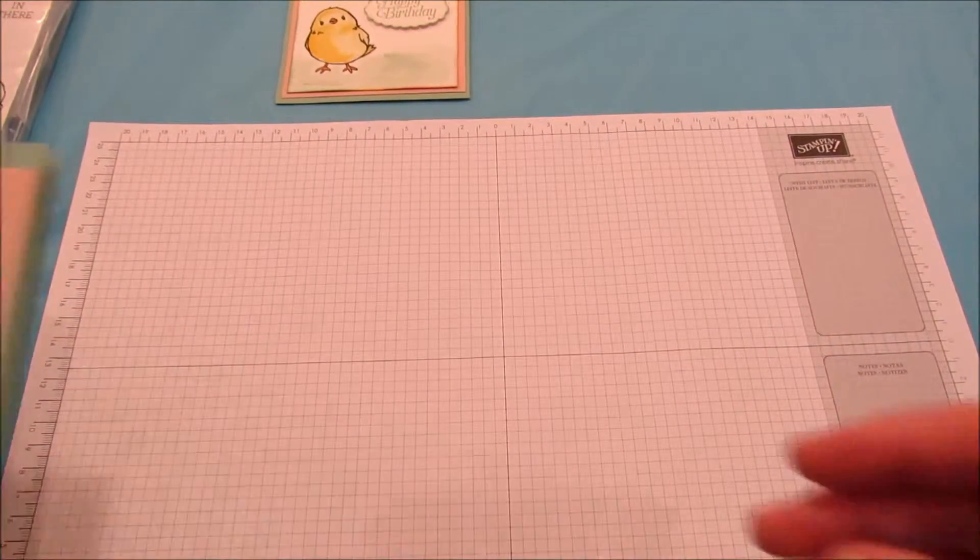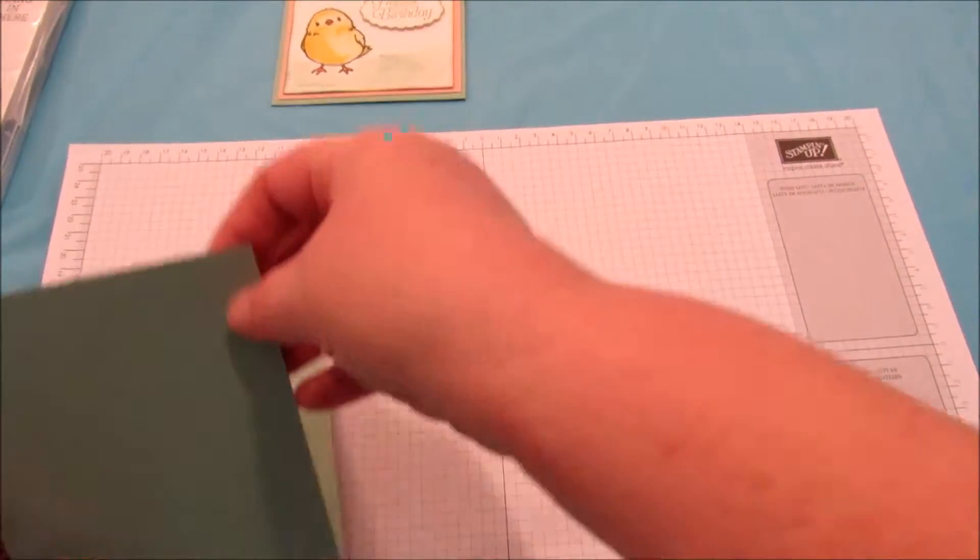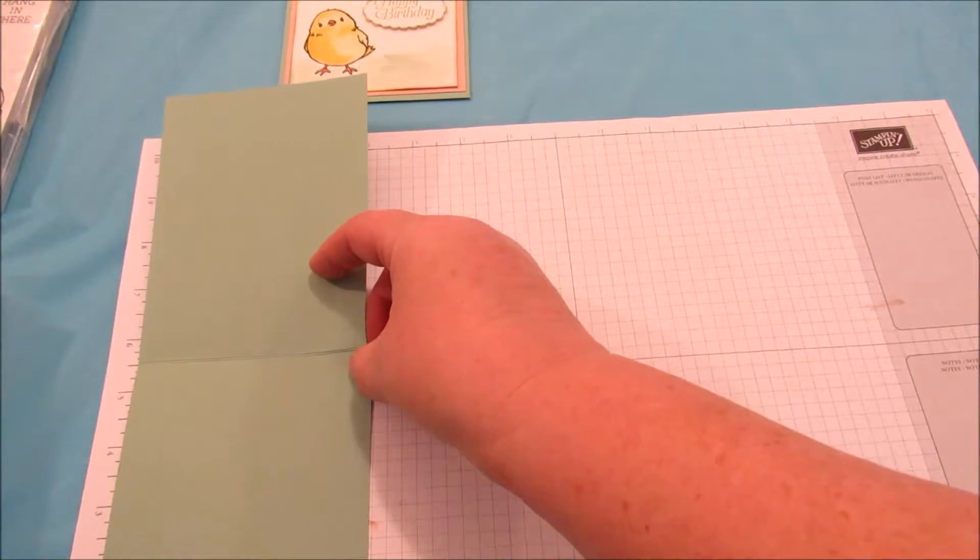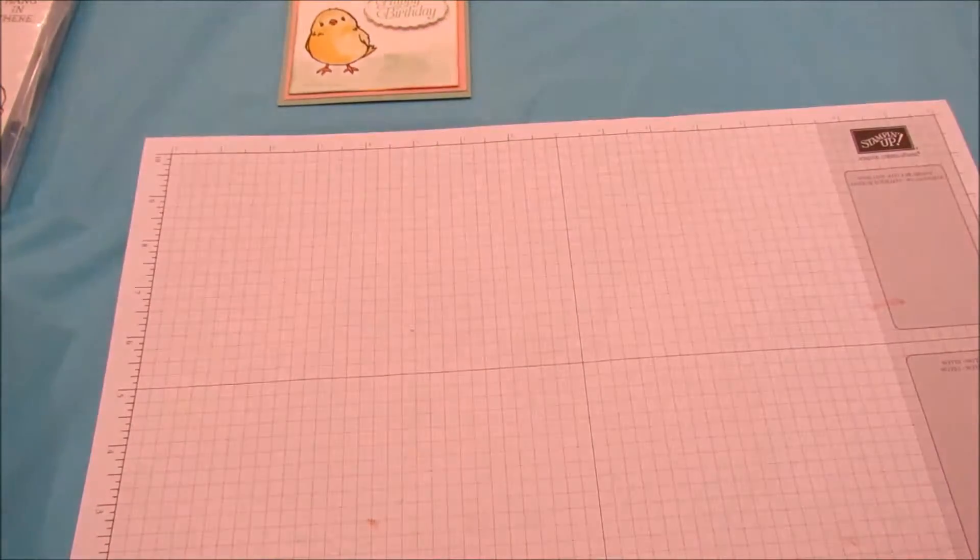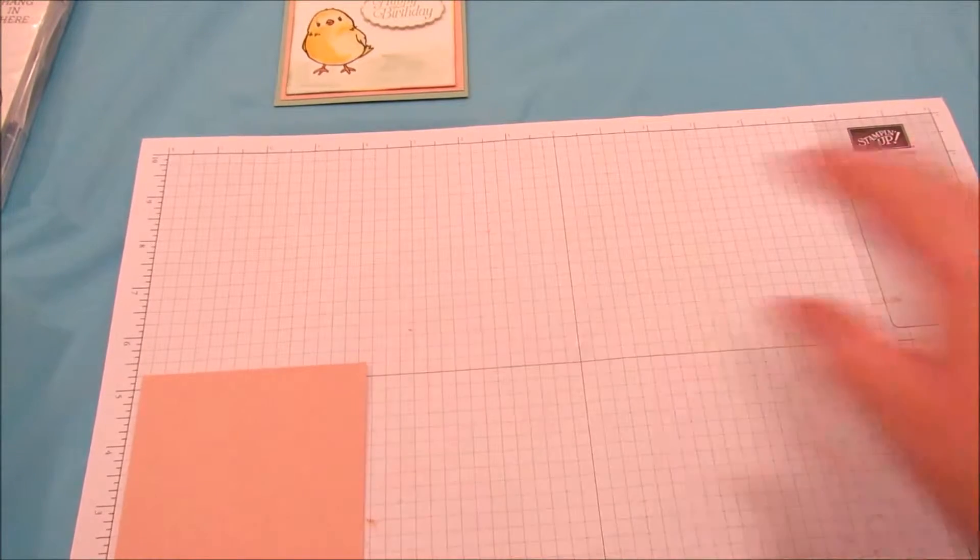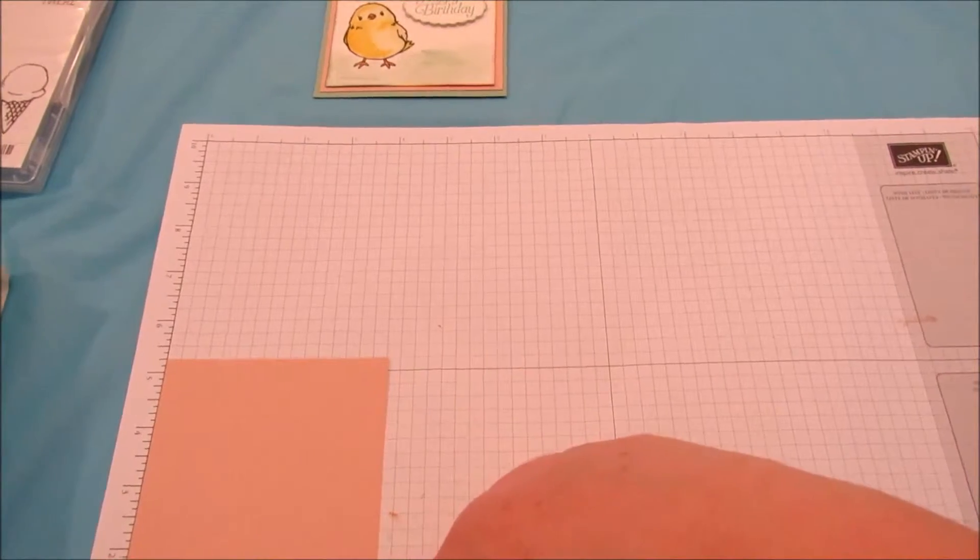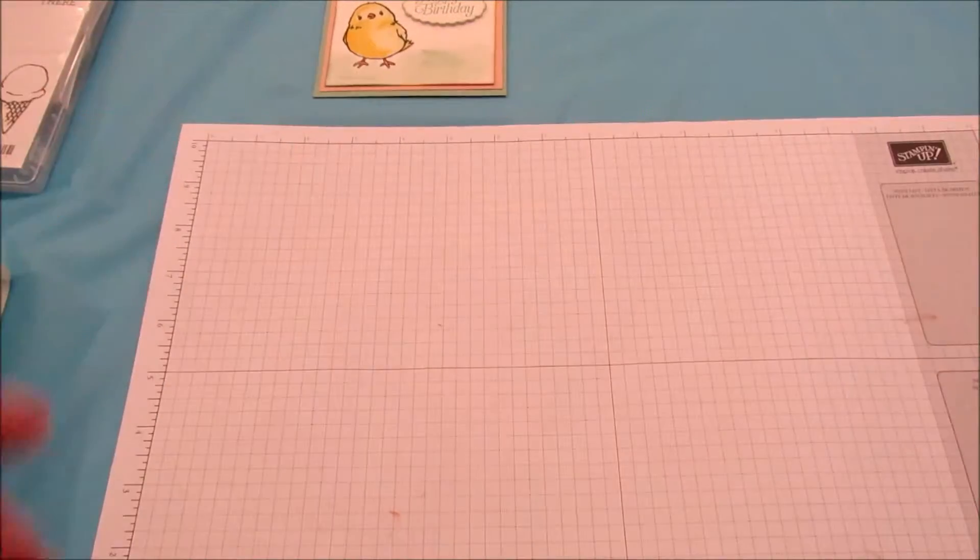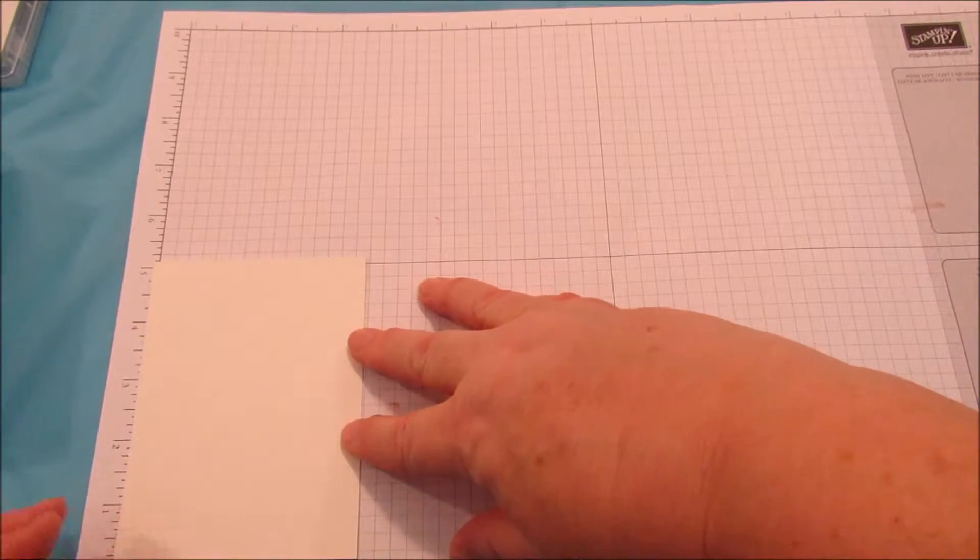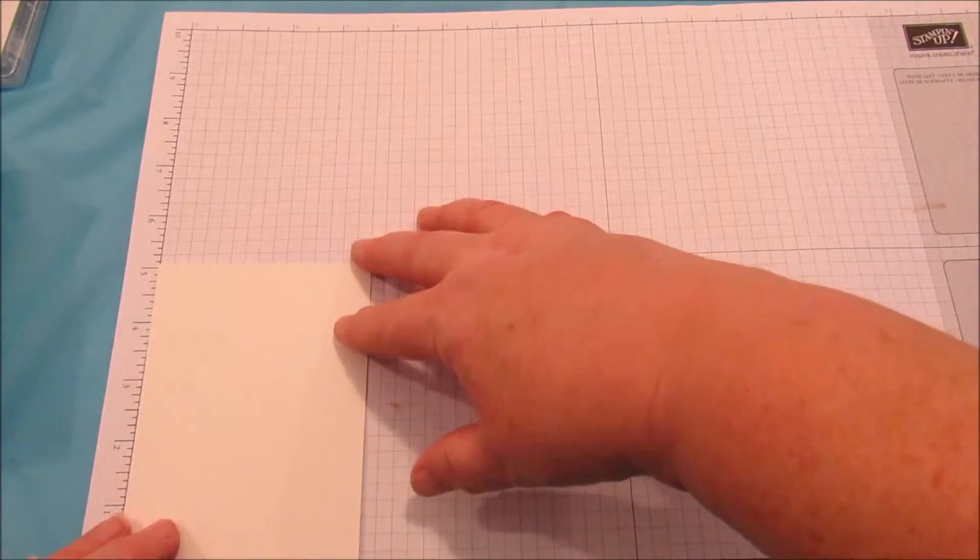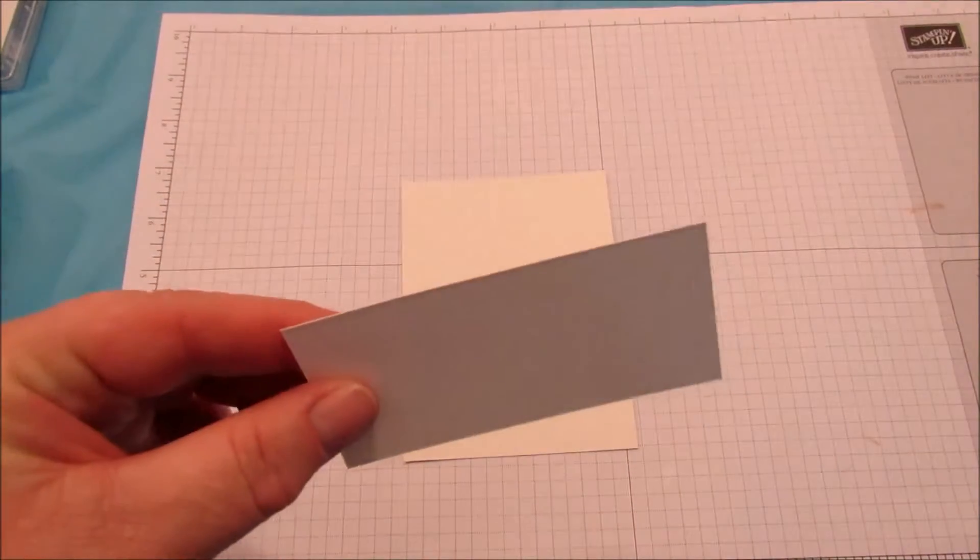Just place that there. Supplies you're going to need is a card base. This card base is 4 1/4 by 11, and then you score it at 5 1/2, so that's your card base. You're going to need mint macaron paper. This is the blushing bride paper, and it's cut 4 inches by 5 1/4. Then we have shimmery white paper, which we have cut at 3 3/4 by 5 inches. That's going to be the thing that we use the most. This little scrap paper is going to be used for our sentiment.